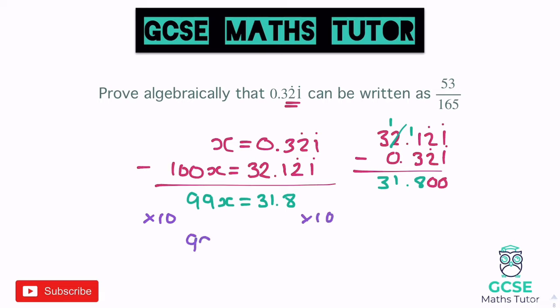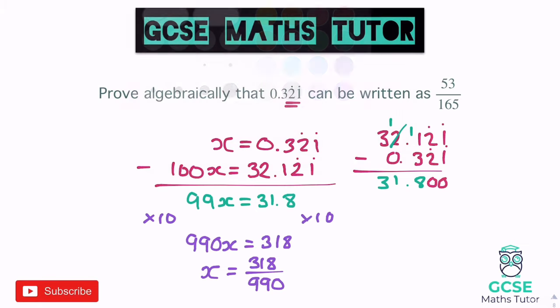That gives us 990x equals 318. We can turn that straight into a fraction: x equals 318 over 990. There are other ways of doing this — you can use 1000x and 10x and take them away from each other — but I prefer sticking to this one process. It involves less writing and fewer different steps.